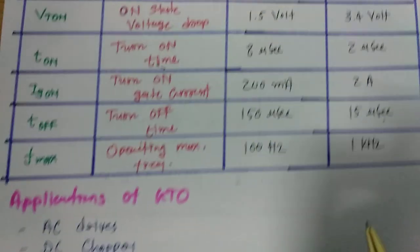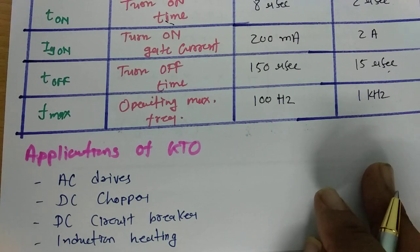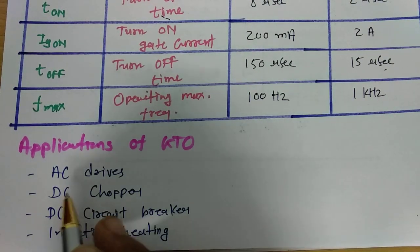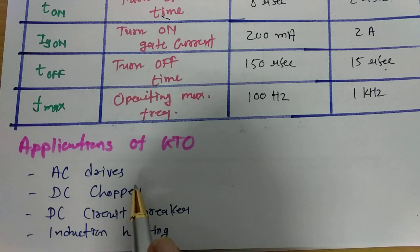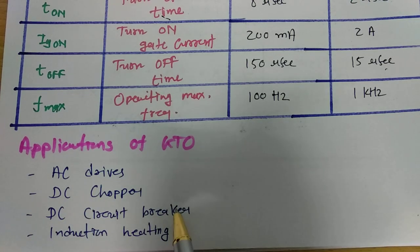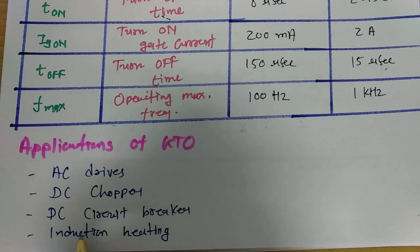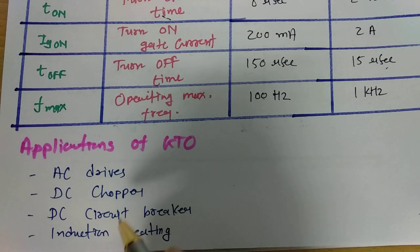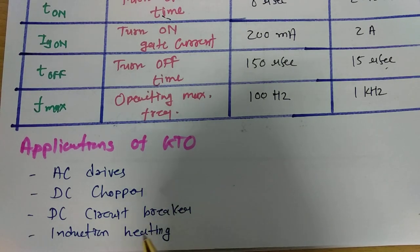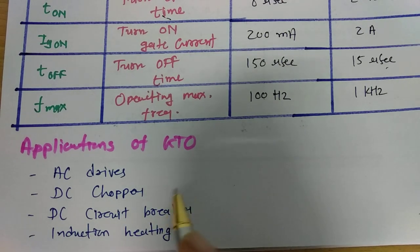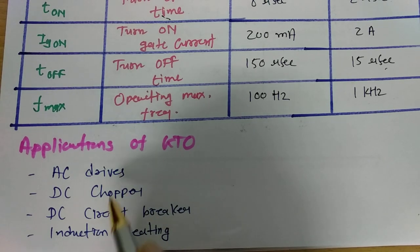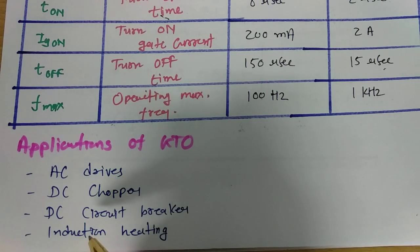Let us sum up this session with a few applications of GTO. GTO can be used in AC drives, DC choppers, DC circuit breakers, and induction heating. All these applications will be explained in detail in the next few videos of this power electronics series.